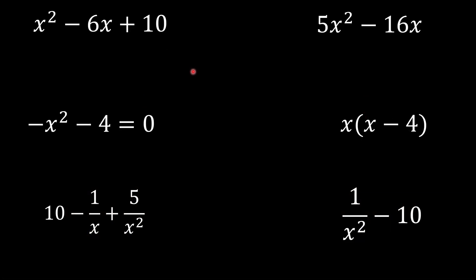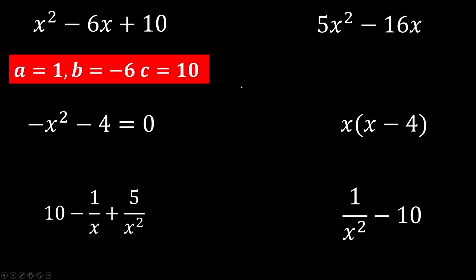Let's find the value of a, b, and c. For this one, when we have nothing in front of x squared, it's 1. This is why we have a is equal to 1, b which is coefficient of x is negative 6, and c is just the constant which is 10. So we have 1, negative 6, and 10.